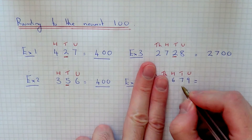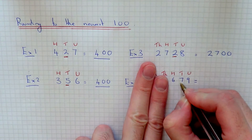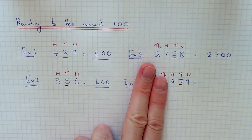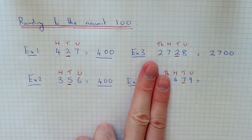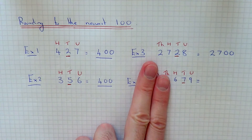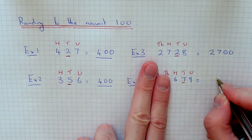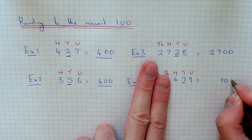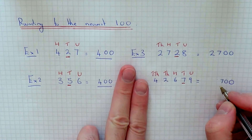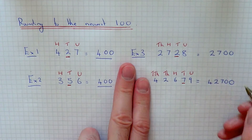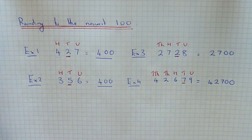So look at the next column to decide. In the tens column we have 7. If that number is 5 or above, we round it up; if it's less than 5, we round it down. Since it's 7, it is above 5, so we're going to round it up to 700. Remember to copy in the first two columns. So we get the final answer: 42,700.